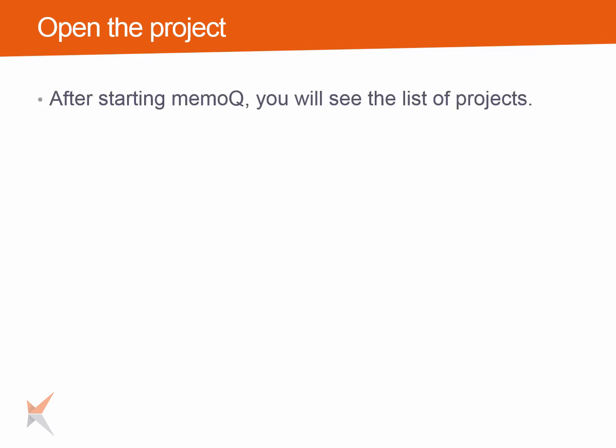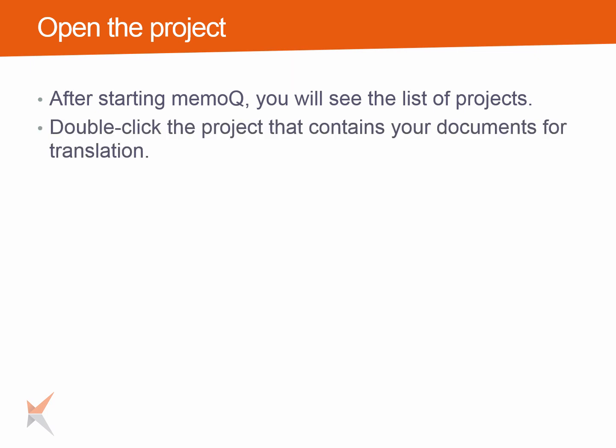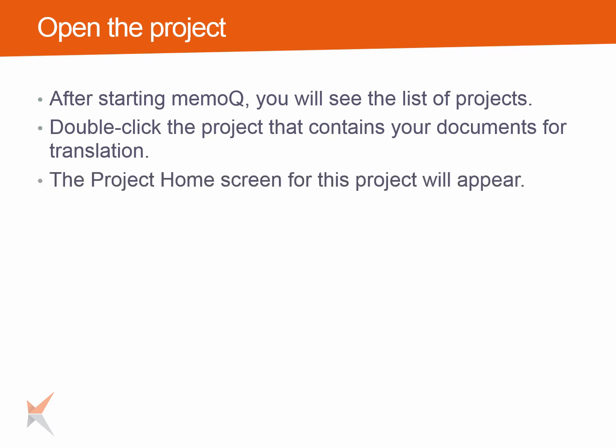To get started with a translation, a project needs to be open. So after starting MemoQ, you will see the list of projects. Double-click the project that contains your documents for translation. The project home screen appears.